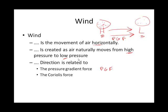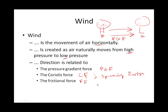The direction that wind blows can also definitely be affected by the Coriolis force — CF. The Coriolis force comes from the spinning Earth, which rotates on its axis once every 24 hours. The last thing that can redirect wind is the frictional force — FF. Frictional force works opposite to the direction of motion, like the pressure gradient force driving air, and friction works against it, slowing things down.